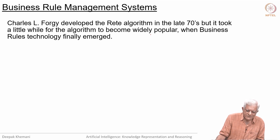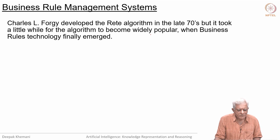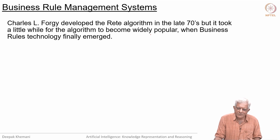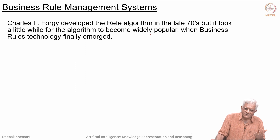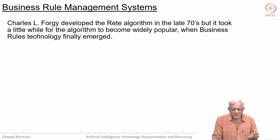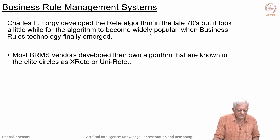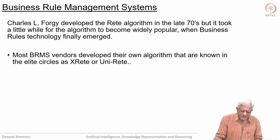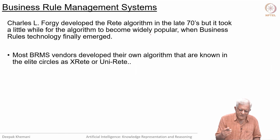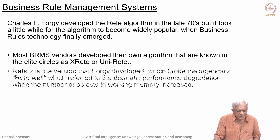The inventor was Charles Forgy, who was doing his PhD at CMU. He developed the Rete algorithm in the 70s, but it took some time for it to become widely popular. Now it is indeed widely popular as business rule technology has emerged. Most BRMS — business rule management system — vendors develop their own algorithms known in elite circles as X-Rete or Uni-Rete, but they are all based on the idea of the Rete net.